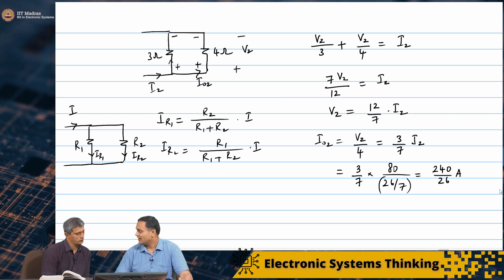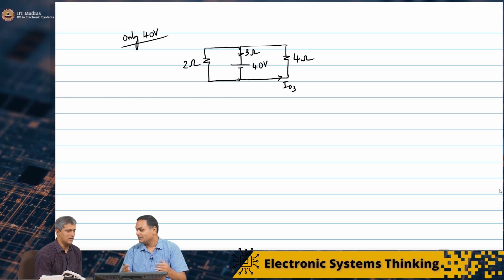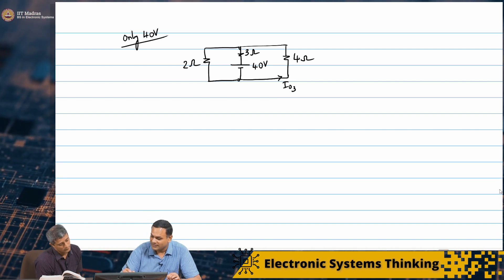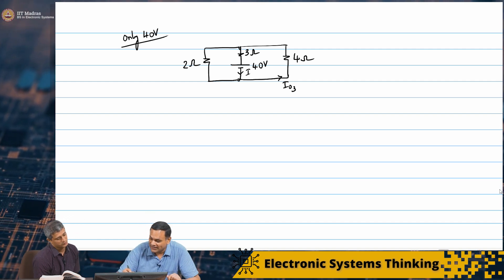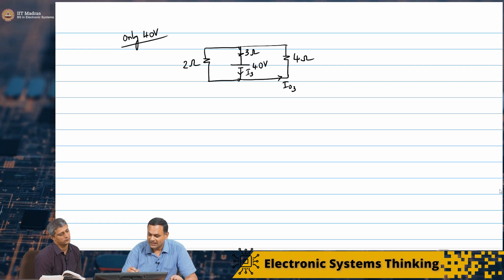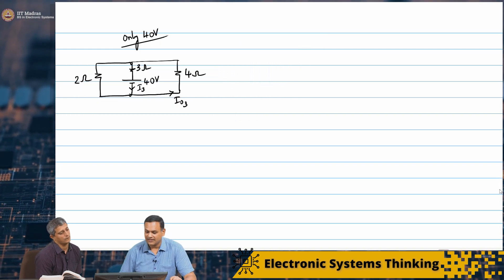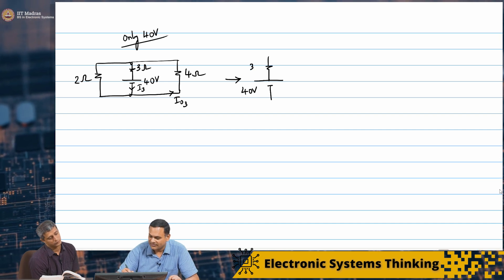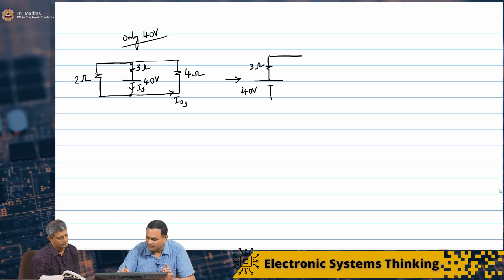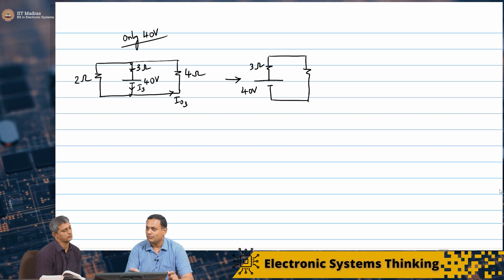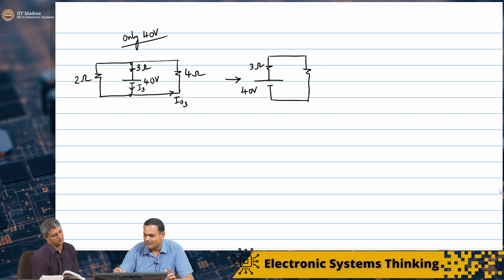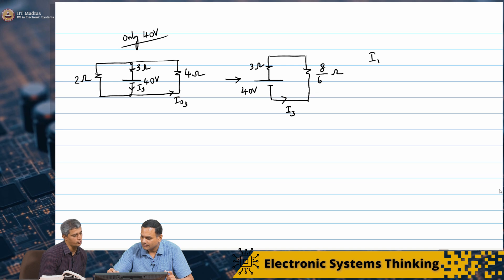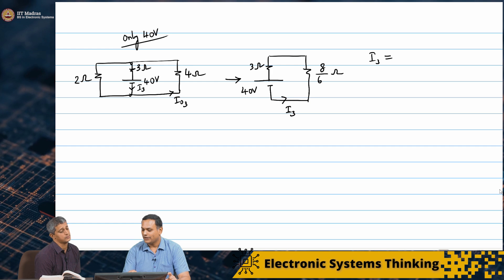This case is similar to I₀₂. I have a total current coming out of 40 volts splitting between 2 ohms and 4 ohms. The parallel combination of 2 and 4 ohms is 8/6 ohms. I call the total current I₃. I₃ = 40 / (3 + 8/6) = 40 / (26/6).